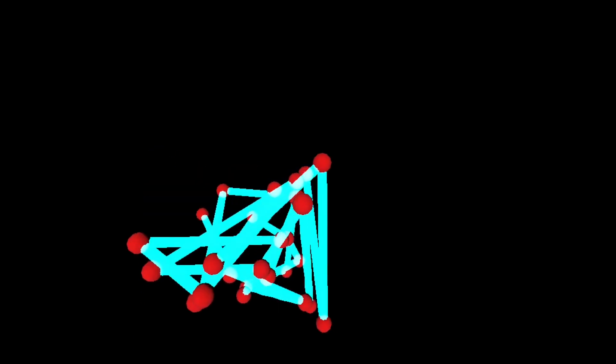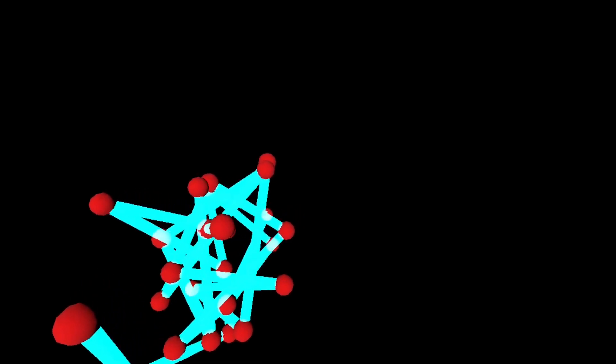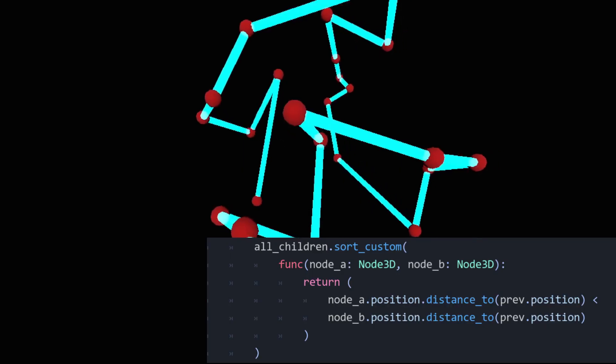For this, I started by just connecting up randomly, but this wasn't quite what I was going for, so the obvious way to fix these connections going everywhere is to just connect the closest node that has not been visited.